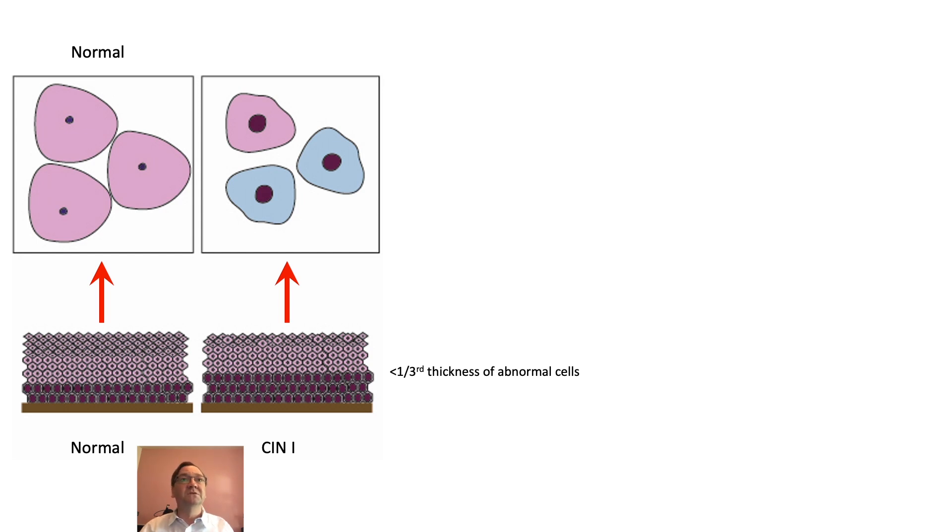But also some parabasal cells that generally stain bluey-pink on dyskaryosis. So that's mild dyskaryosis, or low-grade dyskaryosis.